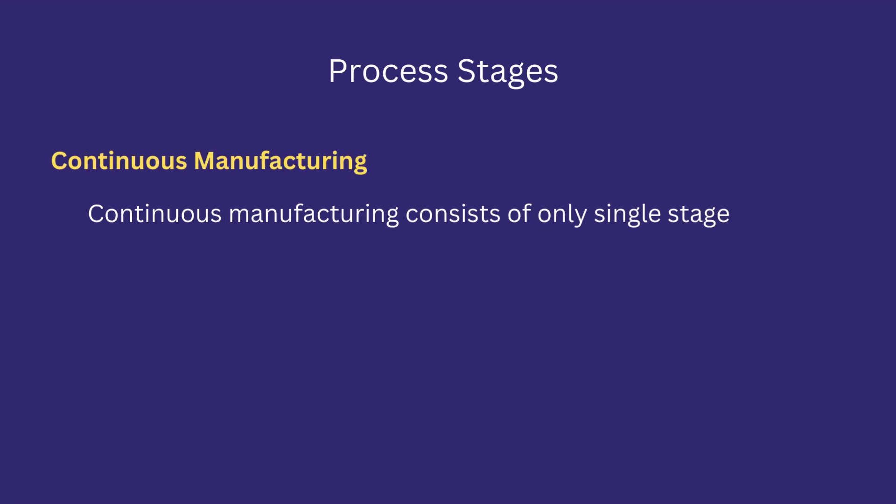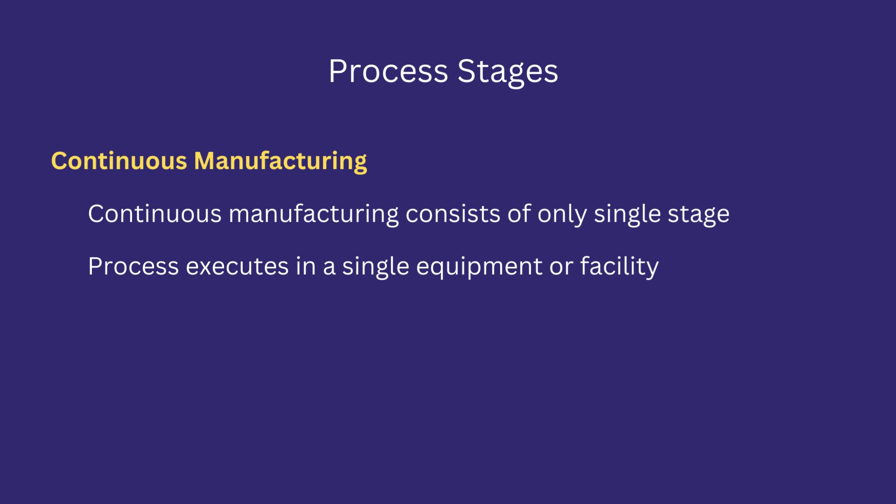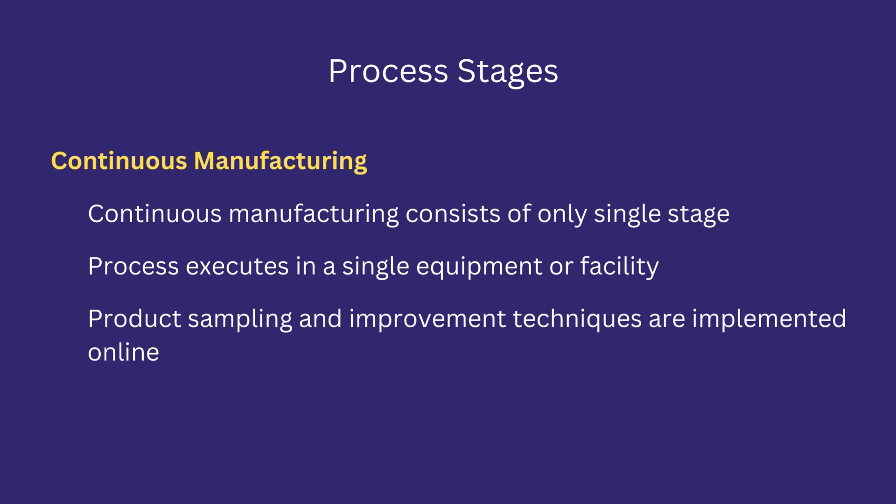In continuous manufacturing, there is only a single stage through which the entire production process occurs. The process is executed in a single equipment or facility, and there is no need to transfer products from one stage, facility, or equipment to another. Product sampling is performed online — that is, at the equipment — without stopping the production process.